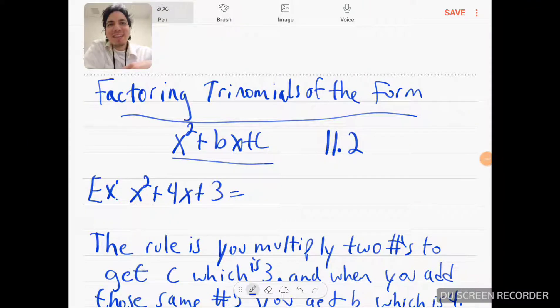Hey class, Absolute 5 here. Today we're going to talk about factoring trinomials of the form x squared plus bx plus c. So we have an example of that form: x squared plus 4x plus 3.